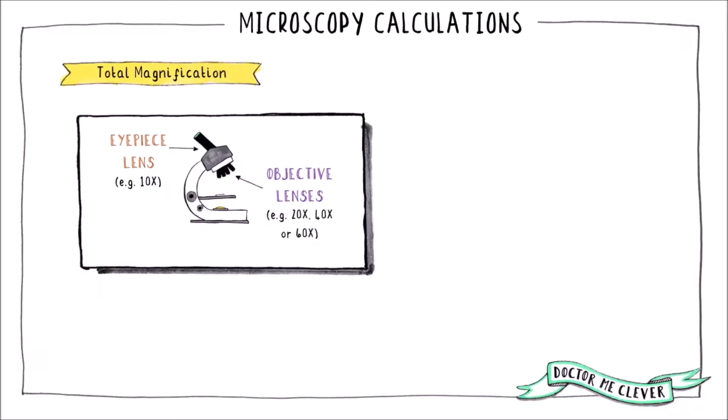A light microscope uses both an eyepiece lens and an objective lens to magnify an image of a sample. Each lens has its own magnifying power and can magnify the image a certain number of times.